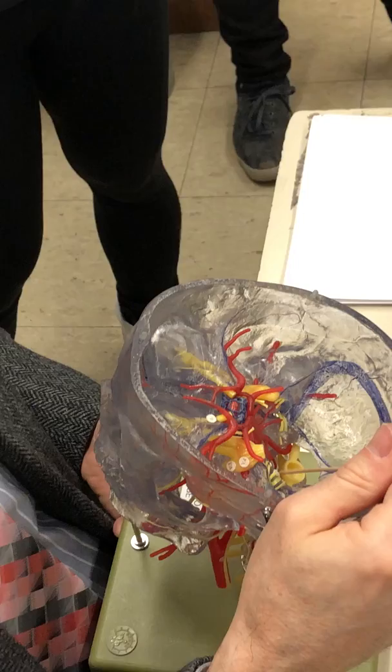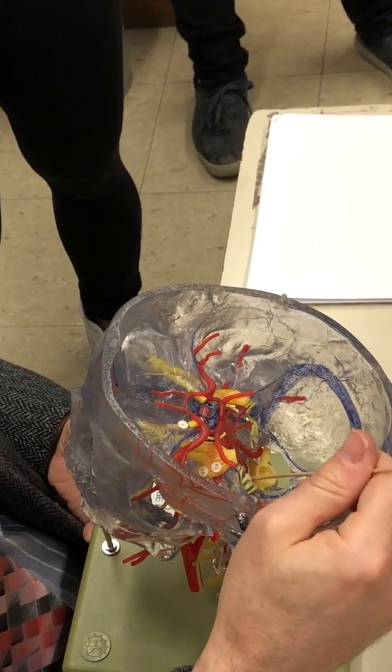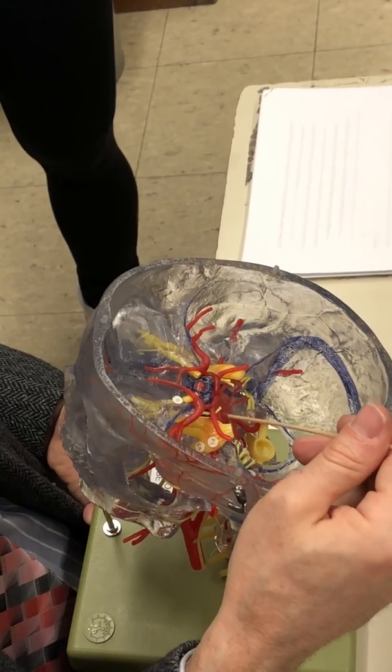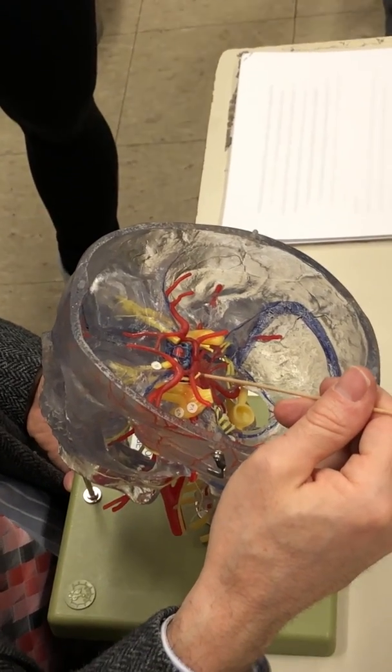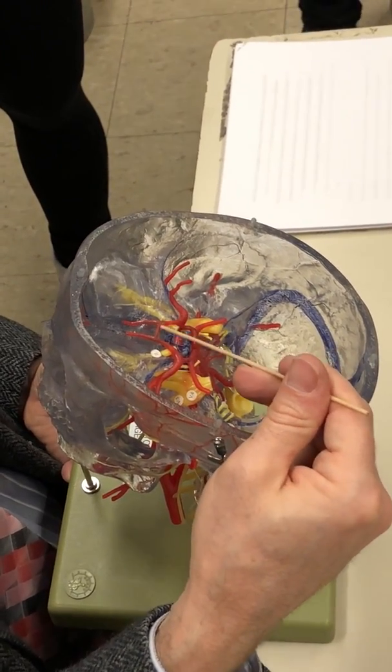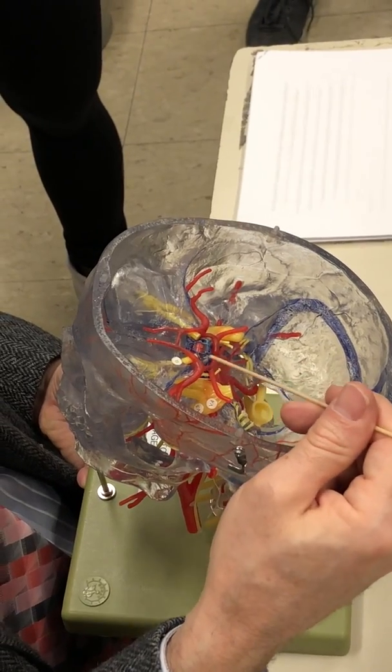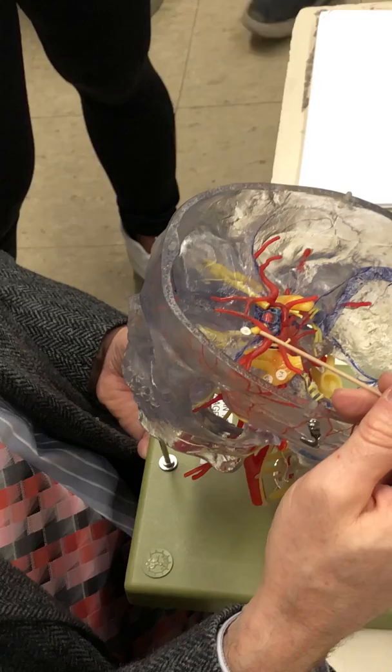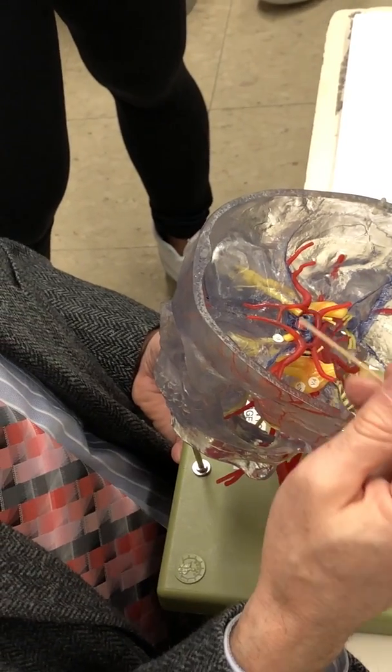In here, the two vertebrals come up through the foramen magnum, and they're gonna come together and form the basilar. The basilar is then gonna supply blood here to the cerebral arterial circle, or the circle of Willis.